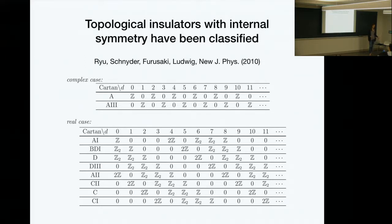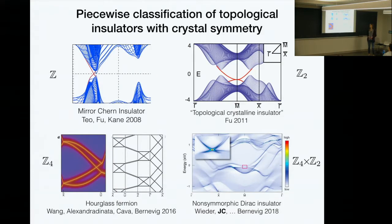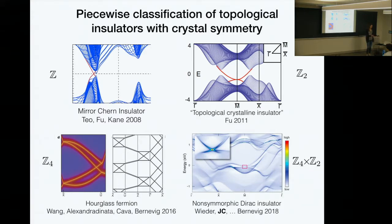The question is, what happens if we have crystal symmetry? Previously, the classification of topological insulators with crystal symmetry has been somewhat piecewise. What I mean is people have considered a particular set of symmetries and then classified the topological phases, but there's been no unifying principle. For example, Liang Fu introduced the topological crystalline insulator in 2011.